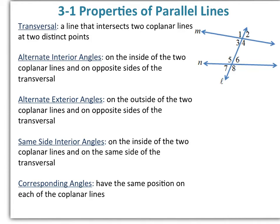Our first section in Chapter 3 is Properties of Parallel Lines. We're going to start off with some definitions. A transversal is a line that intersects two coplanar lines at two distinct points. Referring to our diagram on the right, line L would be our transversal.